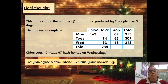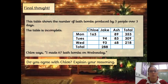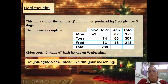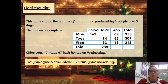Your final thought for today. This table shows the number of bath bombs produced by three people over three days. The table is incomplete. Chloe says she made 67 bath bombs on Wednesday. We can see Chloe made 163 on Monday, but we haven't got data for Wednesday or the total. What we can do is see the total for Wednesday is 218. We can take away the 68 that Ash made and the 93 that Jake made — that would leave us with our answer. Do you agree with Chloe? Pause the video, then come back once you're ready.